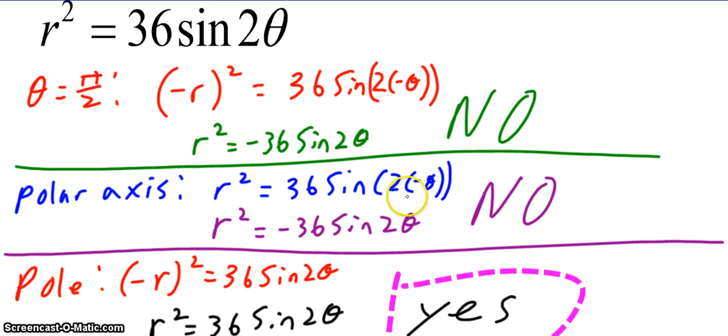What about the polar axis? I plug in a negative theta. I already know from my work above that it is not going to be symmetrical because I'm going to end up with the same thing, r squared equals negative 36 sine of 2 theta.